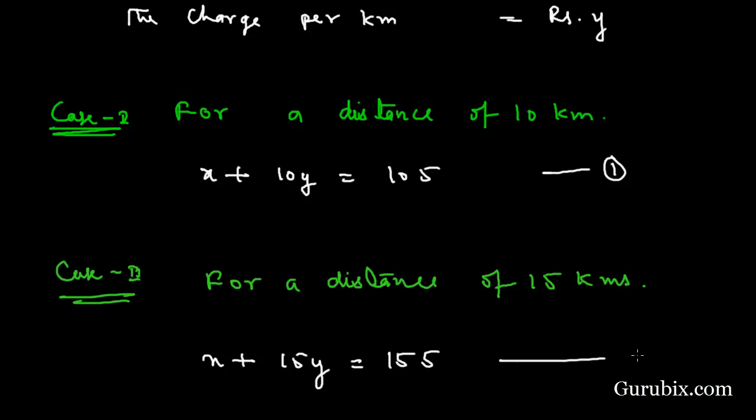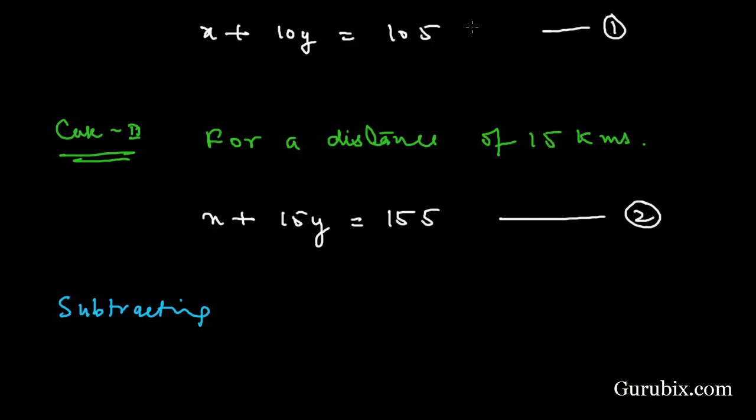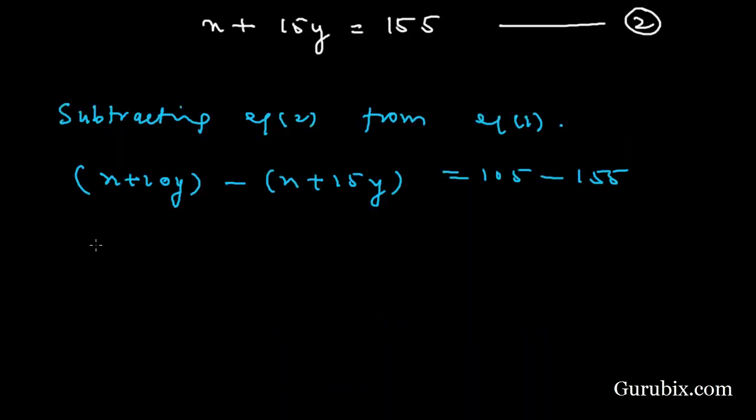Now we shall solve these two equations for X and Y, and we shall apply the elimination method. We observe that the coefficient of X in both terms is equal, so we shall subtract equation two from equation one. Subtracting equation two from equation one, we have X plus 10Y minus X minus 15Y equals 105 minus 155, which gives minus 5Y equals minus 50.